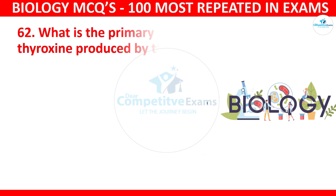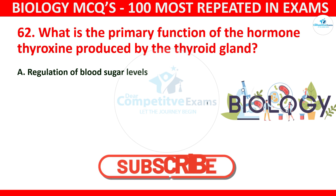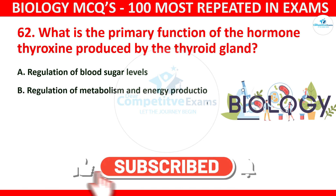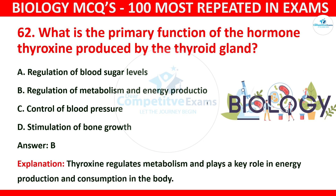Question number 62: What is the primary function of the hormone thyroxine produced by the thyroid gland? The options are regulation of blood sugar levels, regulation of metabolism and energy production, control of blood pressure, or stimulation of bone growth. The correct answer is B: thyroxine regulates metabolism and plays a key role in energy production and consumption in the body.